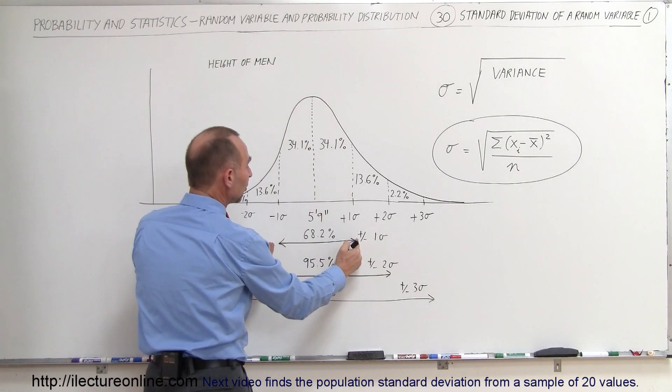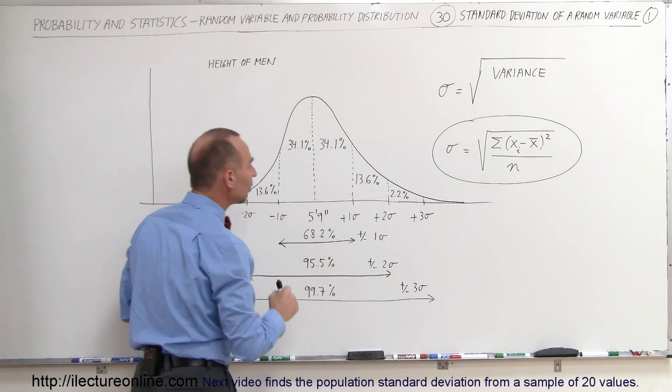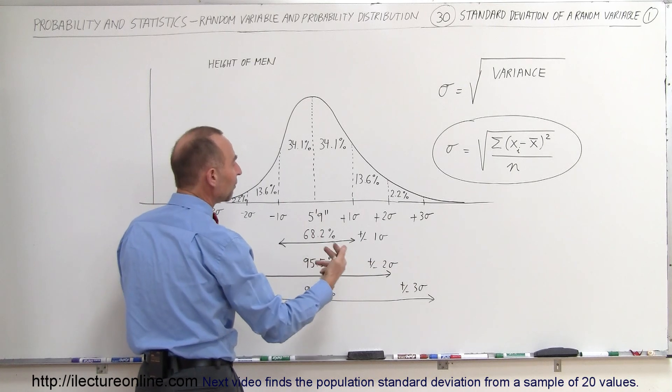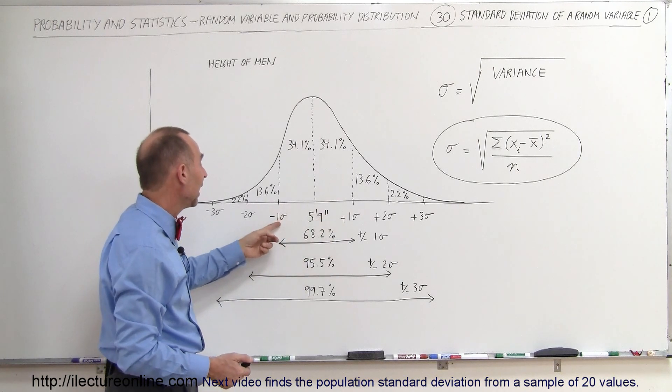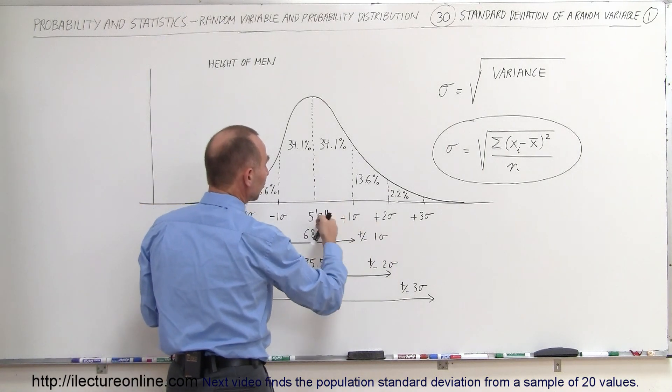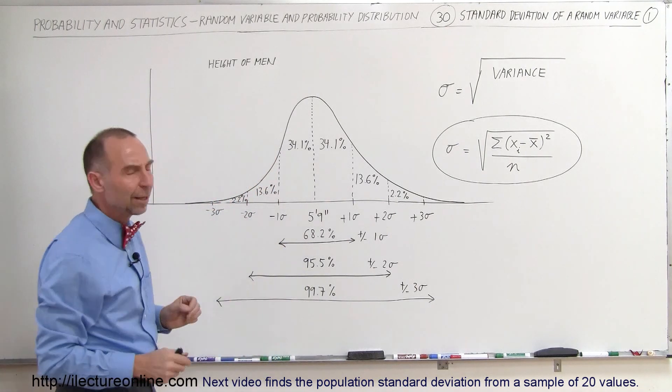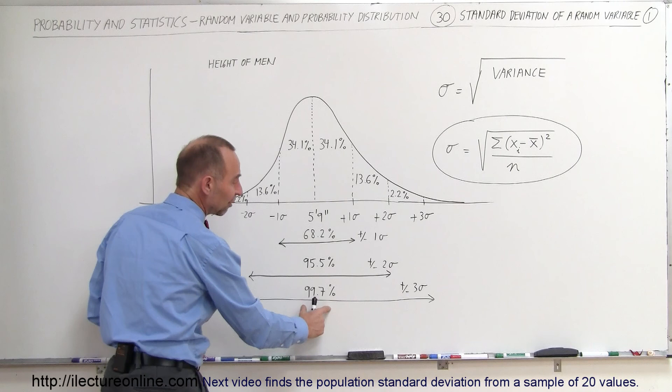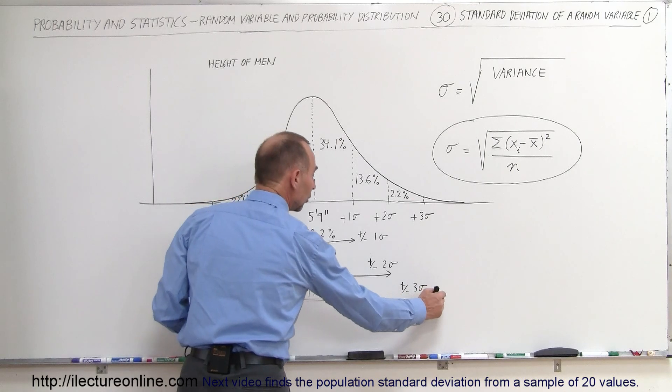For example, 68.2% of all the men will fall between minus 1 sigma and plus 1 sigma away from the average height. 95.5% of all the men will fall between plus and minus 2 sigma. So for example, if sigma is 6 inches, that means 68.2% would fall between 6.5 and 5.3, and 2 sigma would then be 12 inches, that means that 95% would fall between 7 feet and 4 foot 9 or something like that. And finally, plus or minus 3 sigma would, of course, include 99.7% of your population, so out of a million, 997,000 men would fall between those two heights.